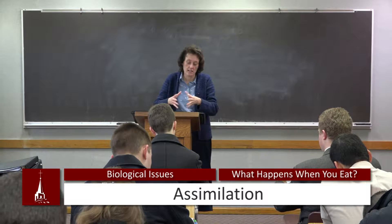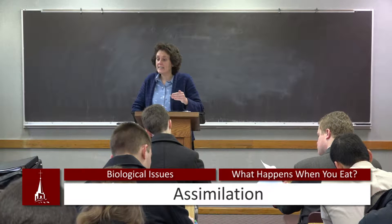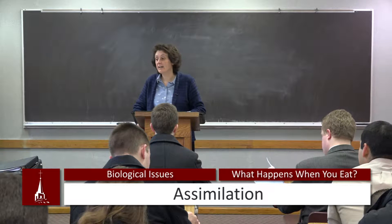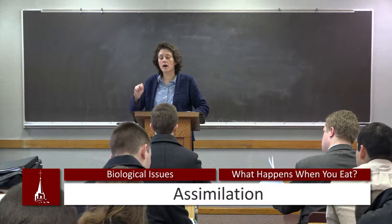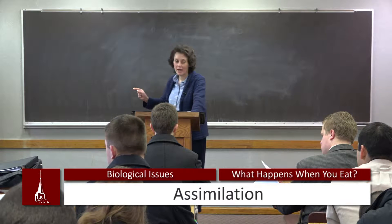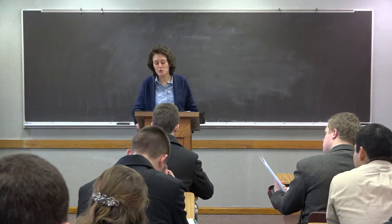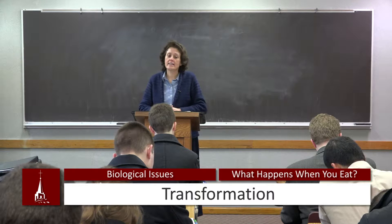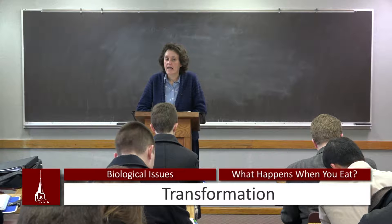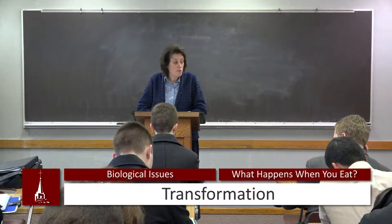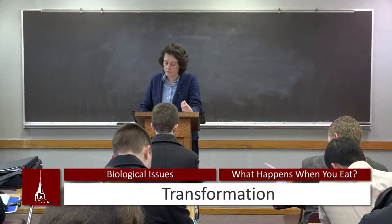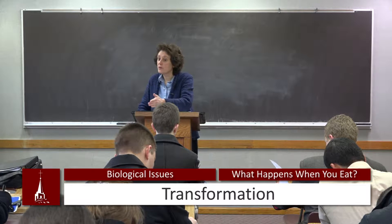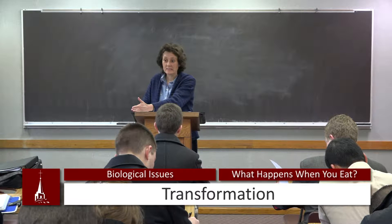So the first thing that happens when you eat is assimilation. The body has to take in nutrients from what you ate — that involves both mechanical and chemical digestion, and then absorption. The primary organ is the small intestine. Step number two is transformation. The liver must transform the nutrients that we absorb — whether they are the amino acids of proteins, the monosaccharides of carbohydrates, and the lipids. What type of molecules are the main dietary lipids? Triglycerides.